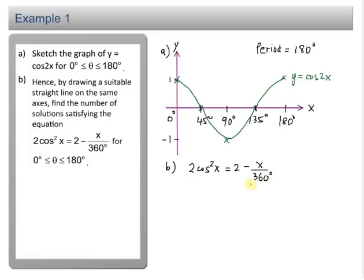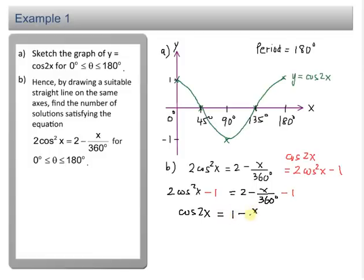What you have to do now is make one side of the equation become cos 2x. So I have 2cos²x here, so I'm looking at the cos 2x formula. Remember, the cos 2x formula, in terms of cos, you have 2cos²x - 1. So I need 2cos²x - 1 on one side. What I'm going to do now is copy down 2cos²x = 2 - x/360°. Then I subtract 1 from the left-hand side and subtract 1 from the right-hand side. So now I have 2cos²x - 1, which is actually cos 2x = 2 - 1 = 1 - x/360°.